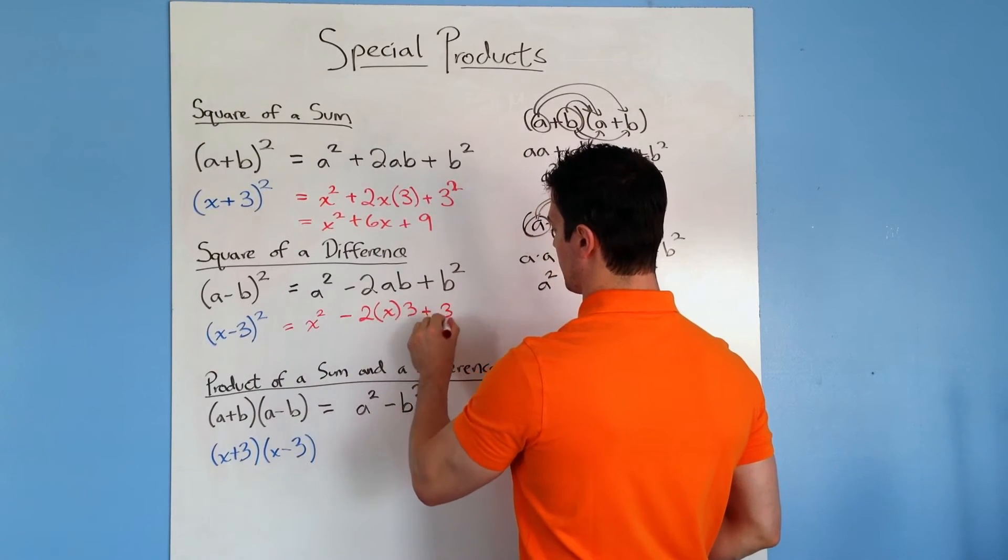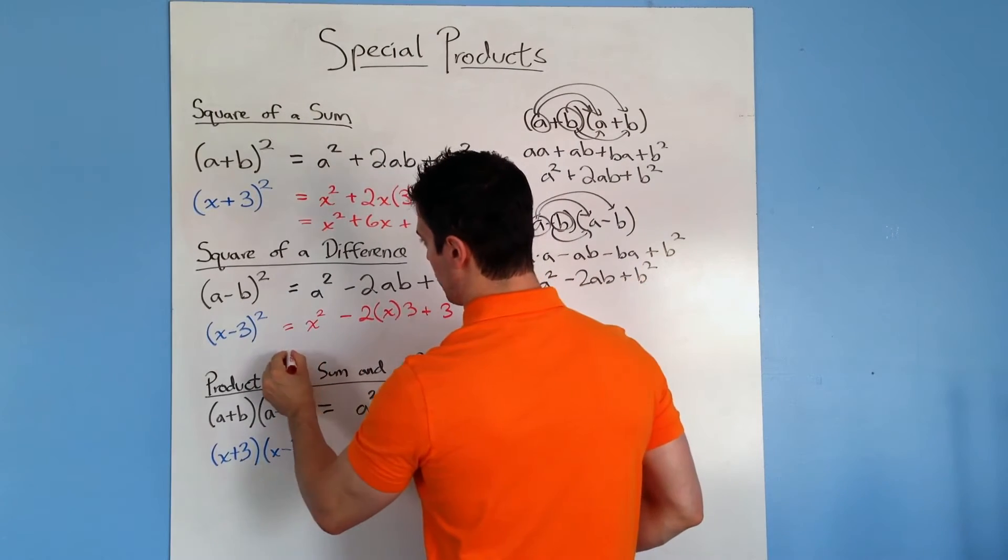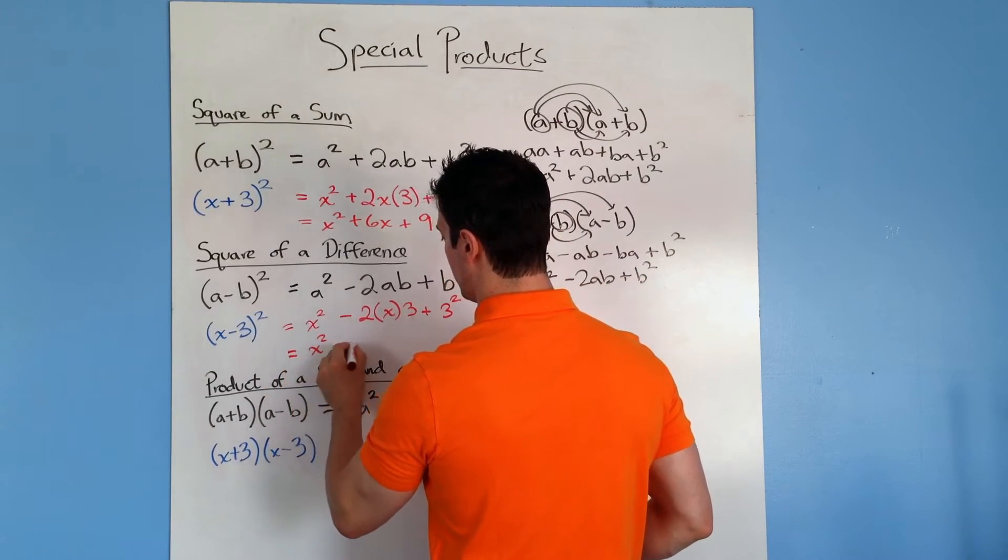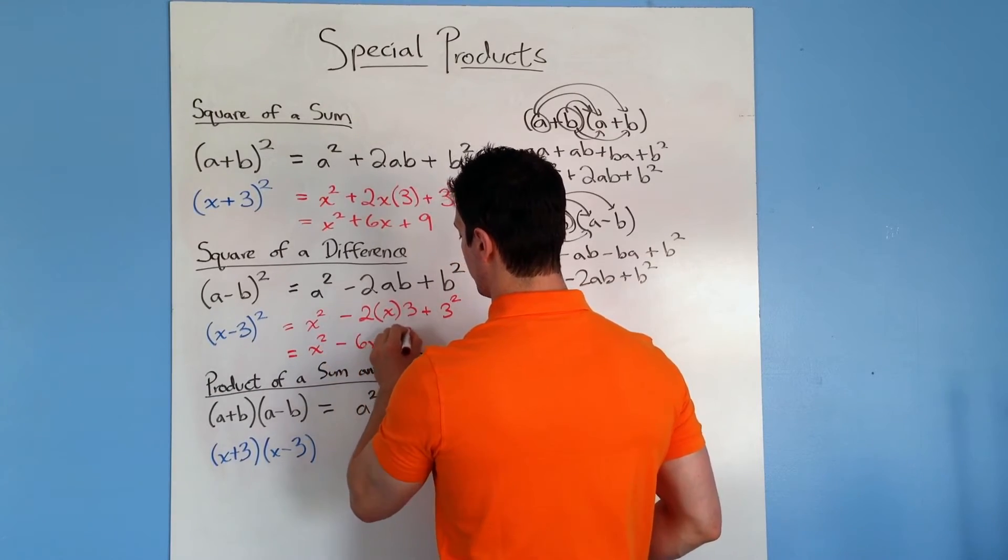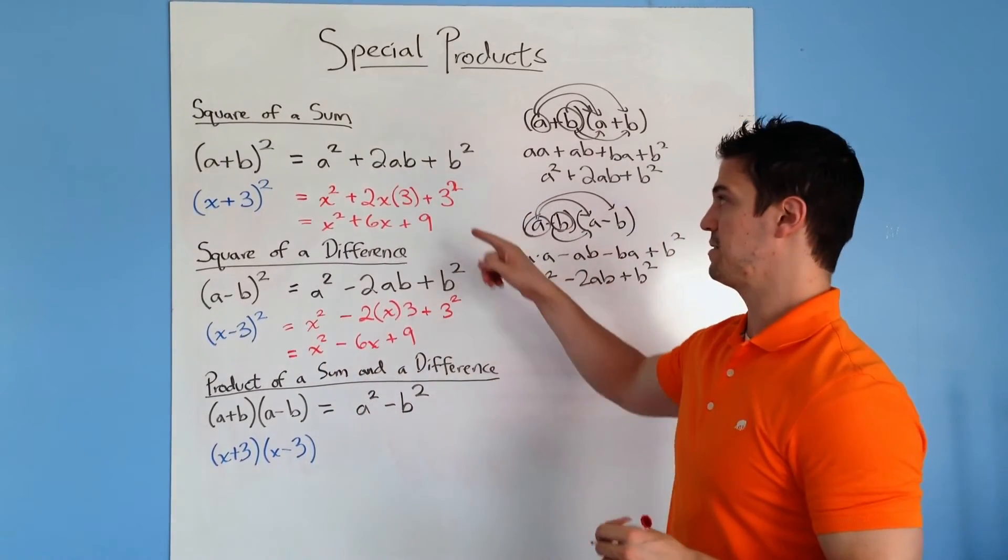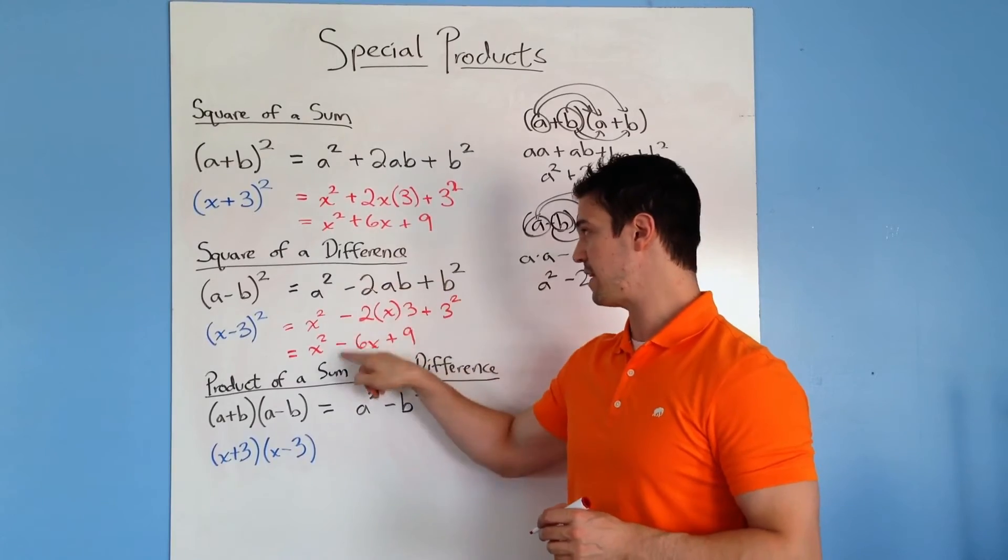which is our b right here. Plus our b term, which is just going to be 3 squared. So then you end up with x squared minus 6x plus 9. So again, it's the same as the square of a sum, only that sign changes right there.